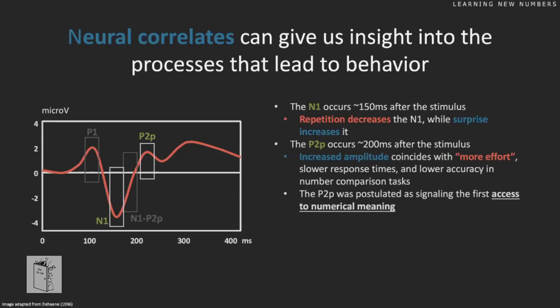This is where neural correlates come in. My neural correlate of preference is EEG, specifically ERPs. The concept is simple: we show them a lot of numbers, and every time the brain reacts we record the neural activity. There's a lot of noise, but also a signal — if you repeat it enough times, the random noise averages out and what's left is a consistent little curve. This curve represents everything that's consistently linked to what we show them.